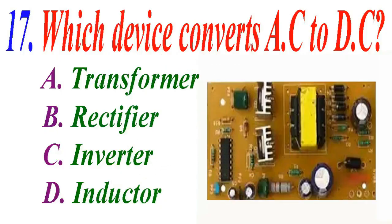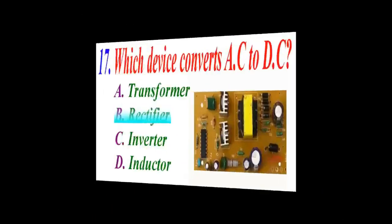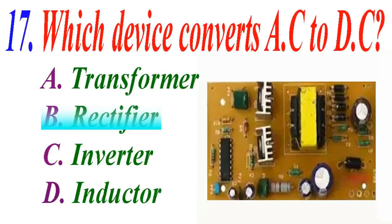Which device converts AC to DC? A transformer, B rectifier, C inverter, D inductor. The correct answer is B rectifier.